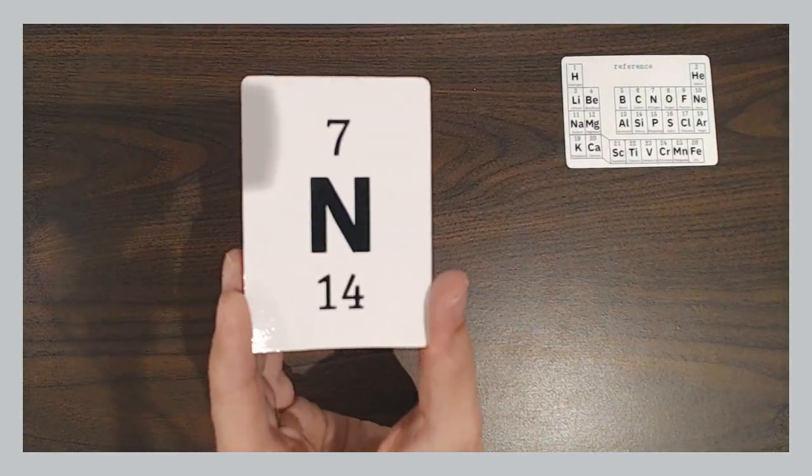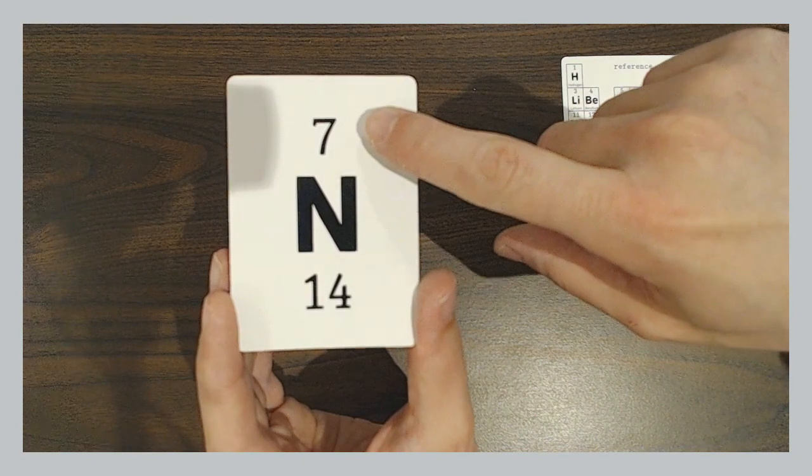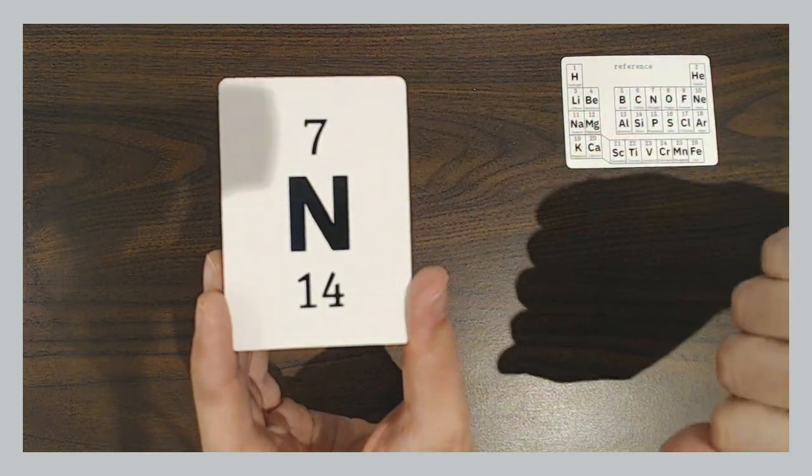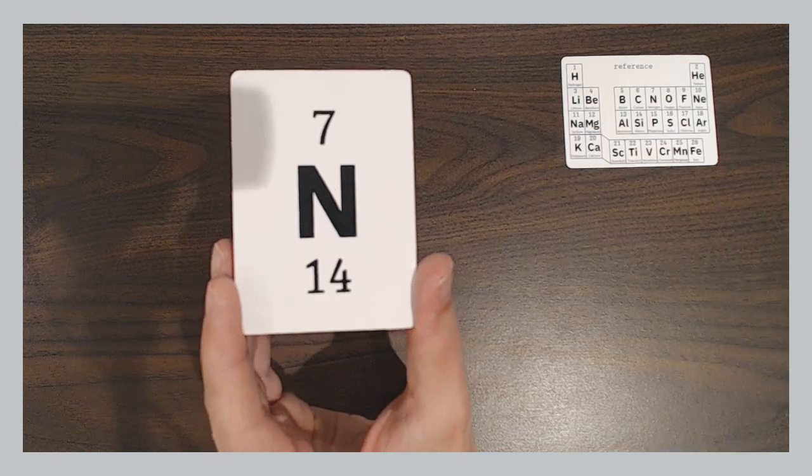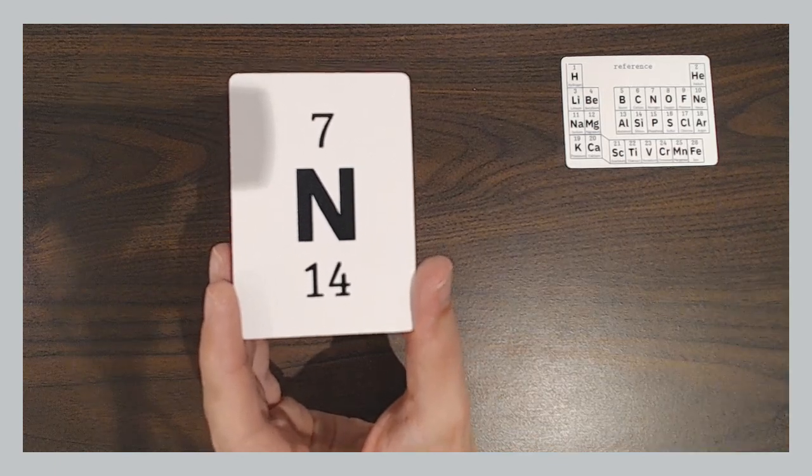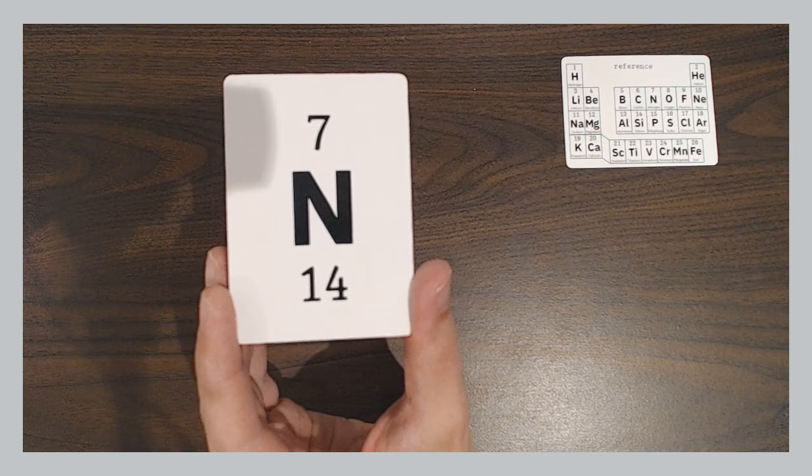Nitrogen has seven protons. Its atomic number is seven. The symbol is an N, and its atomic mass, on average, is 14. This is rounded to a whole number.